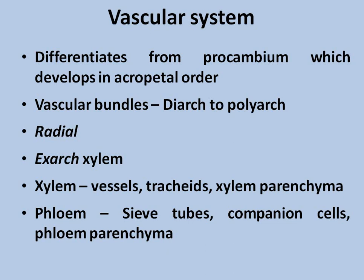The vascular systems of dicot and monocot plants differ slightly. The vascular system contains xylem and phloem, both of which are complex tissues, and their differentiation occurs from pro-cambium cells in acropetal order. In dicot roots, vascular bundles can range from 2 to 6 (diarch to hexarch), whereas in monocot plants such as Poaceae members like wheat, rice, and maize, vascular bundles in roots are polyarch, meaning more than 6.